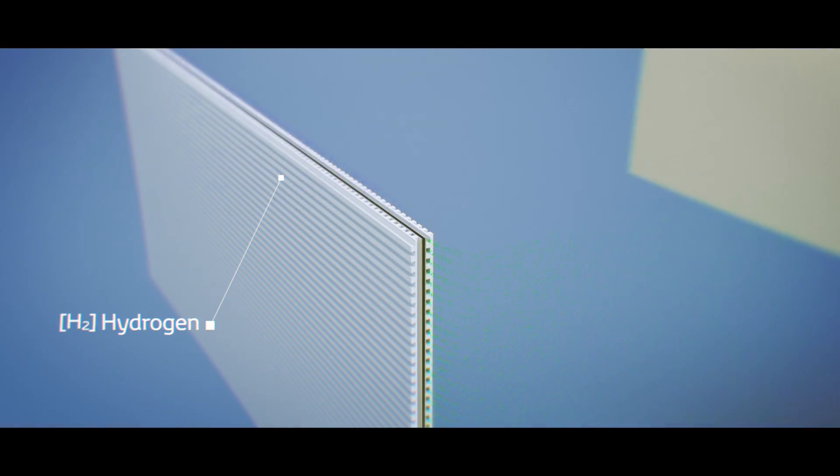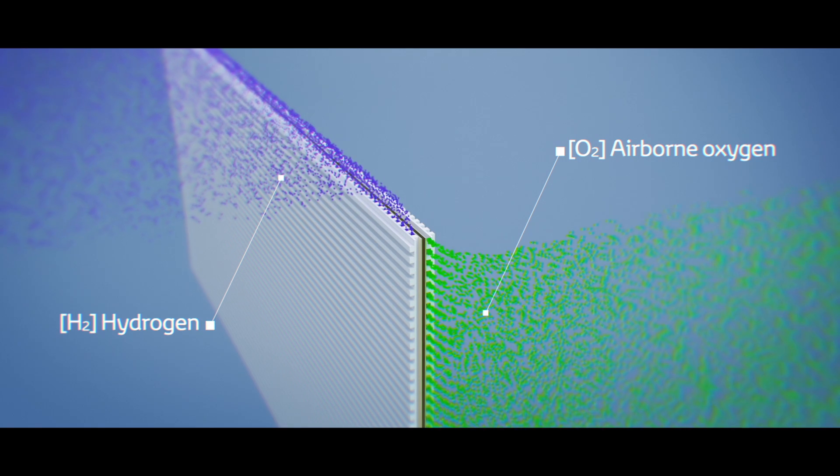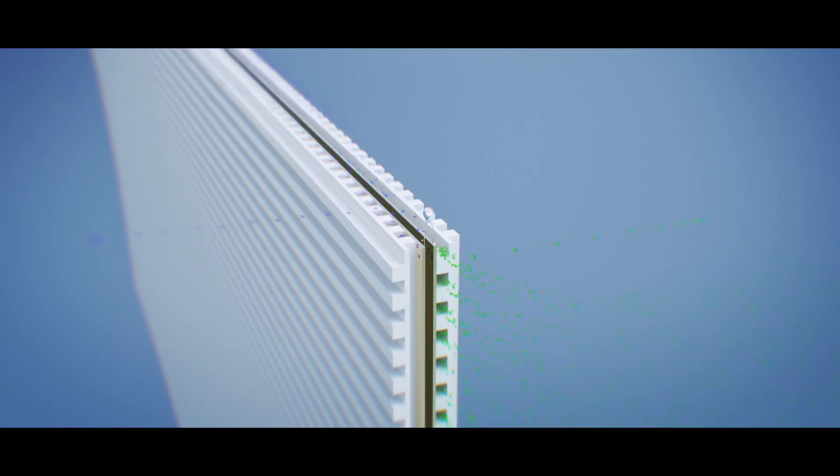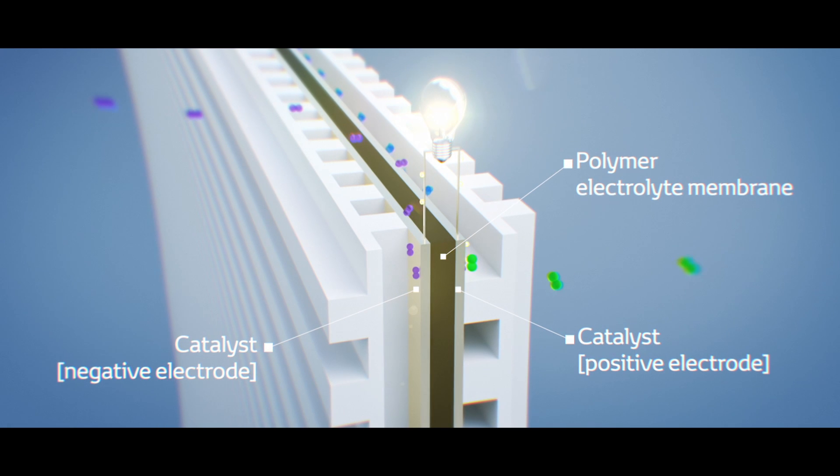This is how the electricity is generated. The car takes in oxygen from the air which meets hydrogen from the high pressure hydrogen tank in the fuel cell. Many fuel cells combine to form the fuel cell stack.